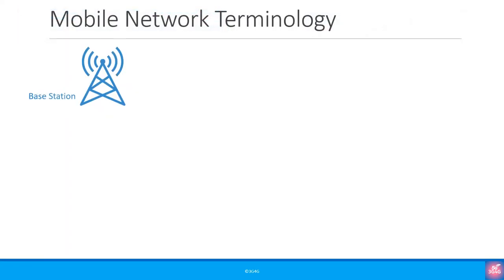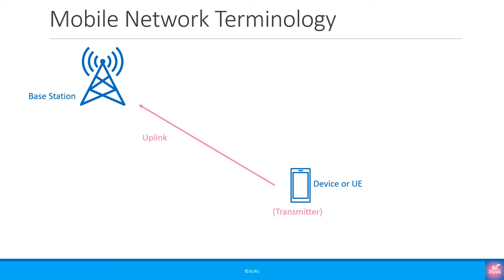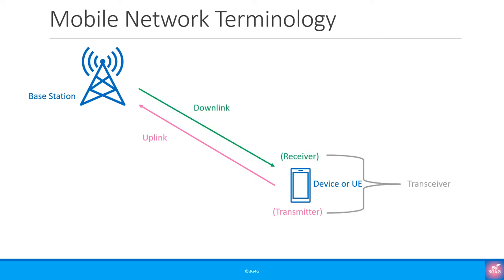As you are no doubt aware, mobile communications involve a base station and a device, or user equipment, or UE. If you are wondering why we call it a UE, we have a video for that and the link is in the top right hand corner. The device has a transmitter which can send uplink information and a receiver that allows it to listen to the base station. The transmitter and receiver collectively are called a transceiver.